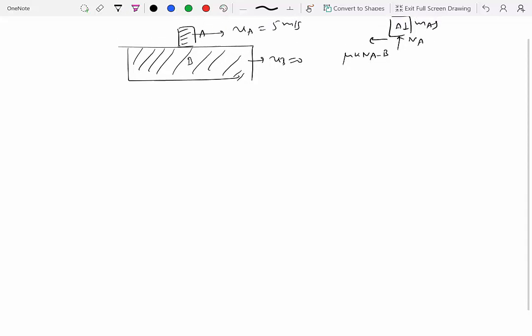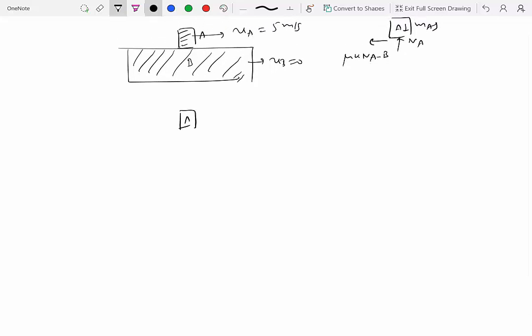Okay, now let me change this problem slightly. I will say that I have the same object A, which is still moving with 5 meters per second velocity to the right. Now B over here is actually moving with a velocity of 3 meters per second. So now both of them are actually moving - A is moving to the right, B is also moving to the right. Now the question is, which way would the friction force on A point?